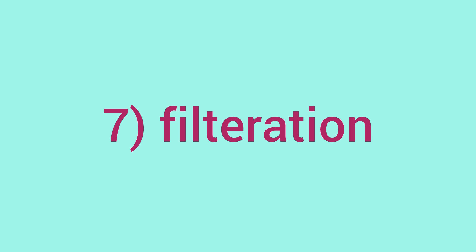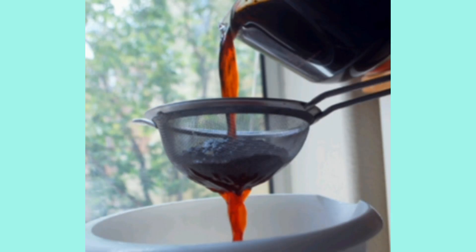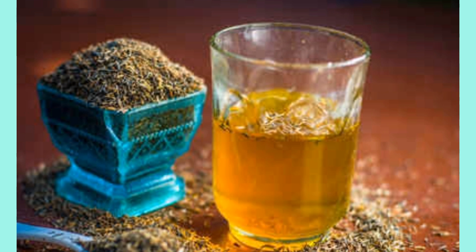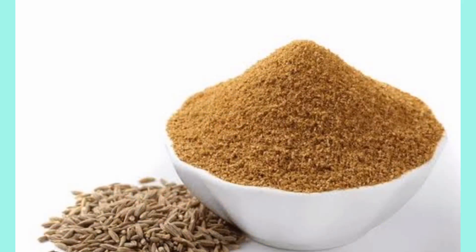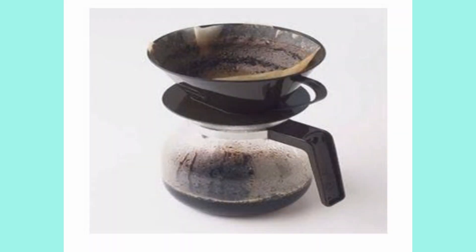The seventh method is filtration. Filtration is a type of process which separates solid particles mixed with liquid with the help of a filter medium. The liquid obtained after filtration is called filtrate. It is similar to the decantation process. For example, separation of tea leaves from tea. Activity: take a mixture of jeera powder mixed with water, smash the jeera first, then mix the powder with water and separate it using the filtration technique.